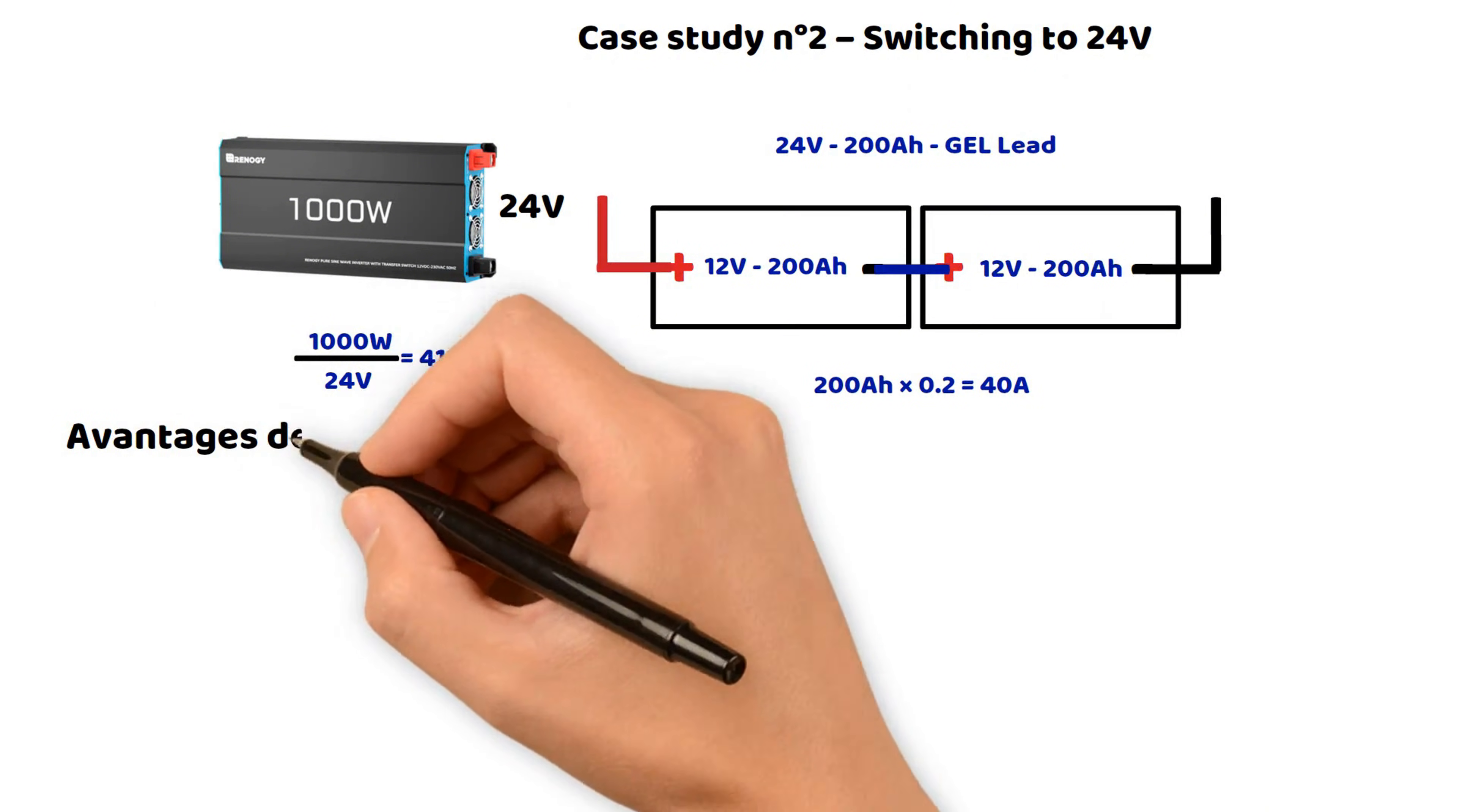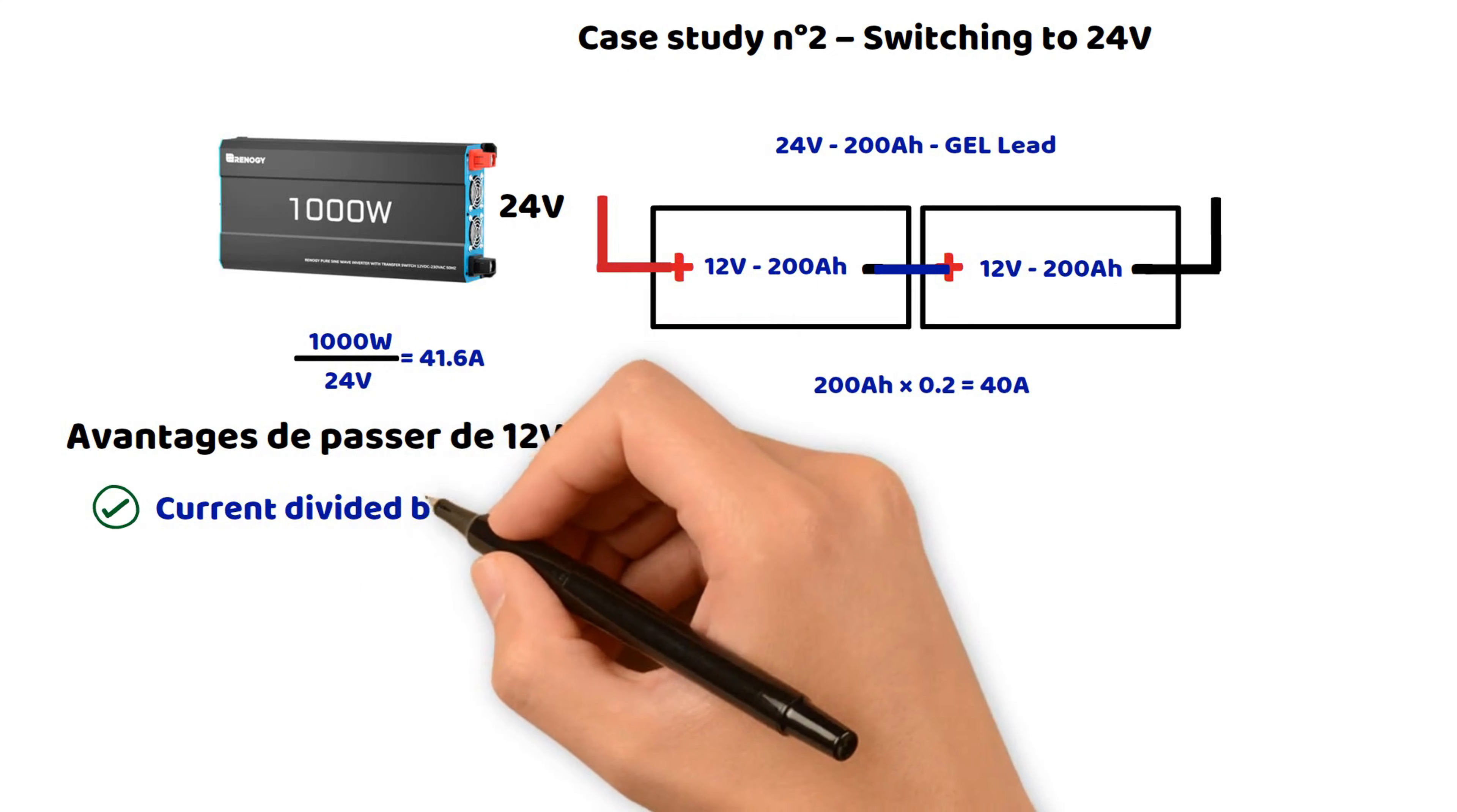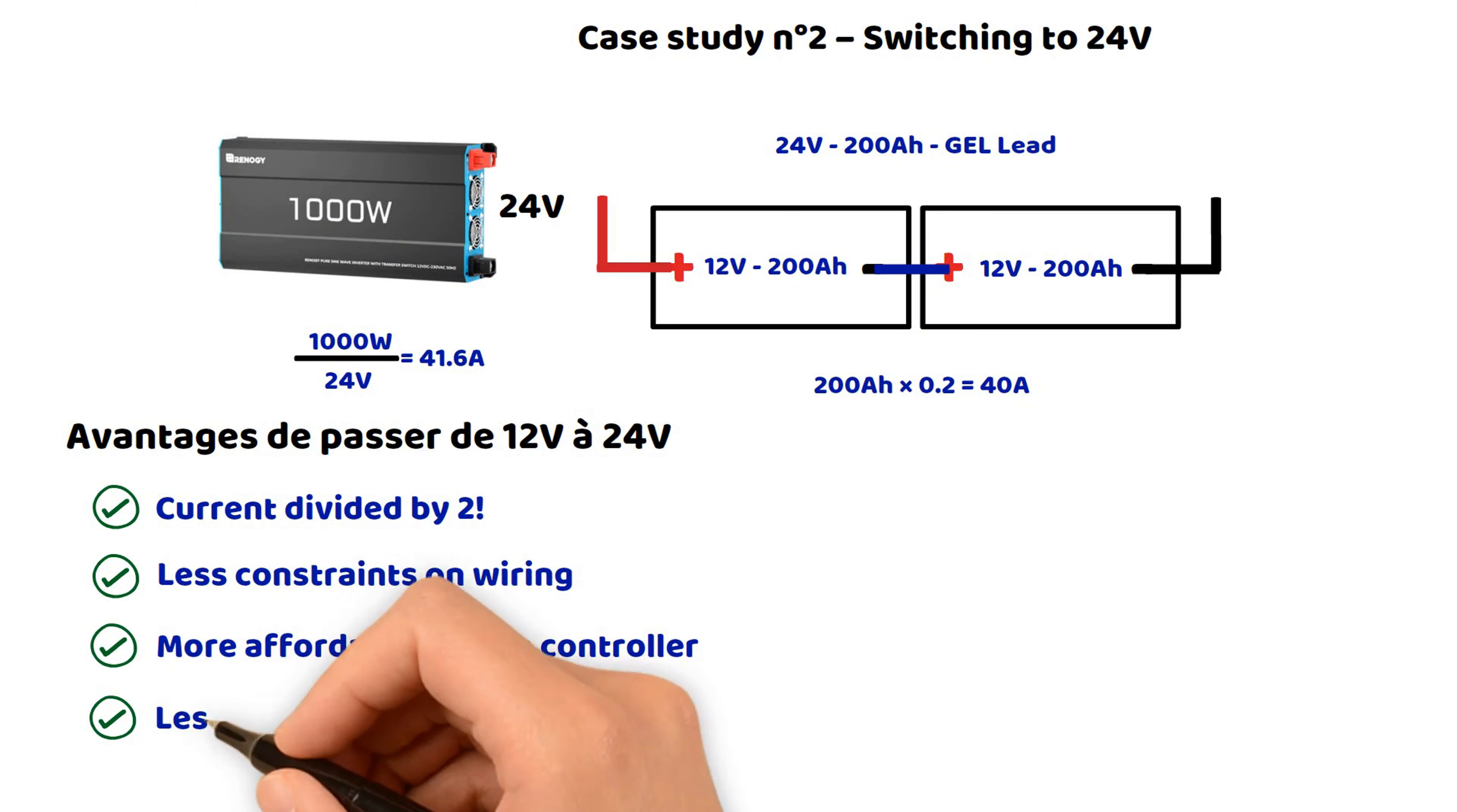So, let's summarize the advantages of the series connection and the fact of switching from 12 volts to 24 volts. First, the current is divided by two for the same power, which means reduced heating and therefore better efficiency. Fewer constraints on wiring, smaller cable diameter and lower costs, a more affordable charge controller, and less overall thermal stress on the entire system.